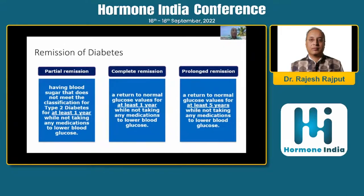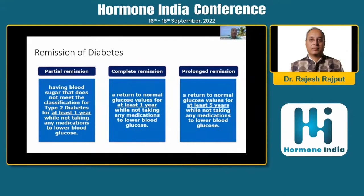Partial remission is defined as when an individual has blood sugar that does not meet the criteria for type 2 diabetes for at least one year, while not taking any medications to lower glucose levels. Complete remission is when glucose levels are within normal range for at least one year without any anti-diabetic medication. Prolonged remission is maintaining normal glucose values for at least five years without any medication.